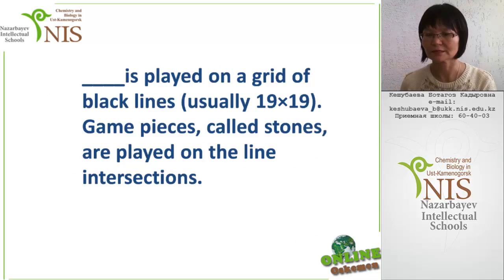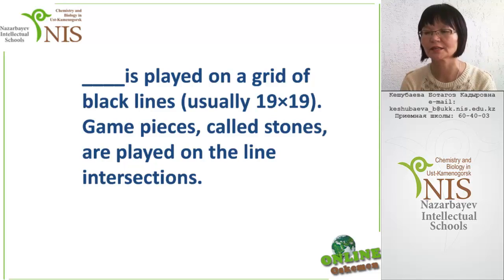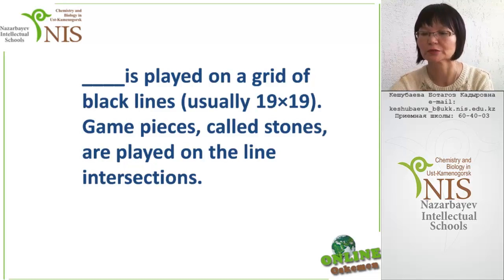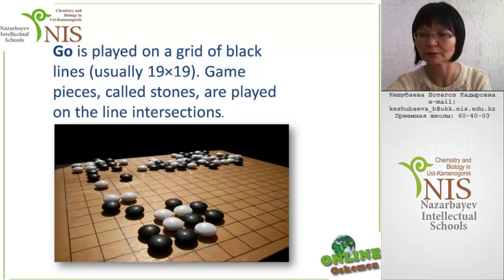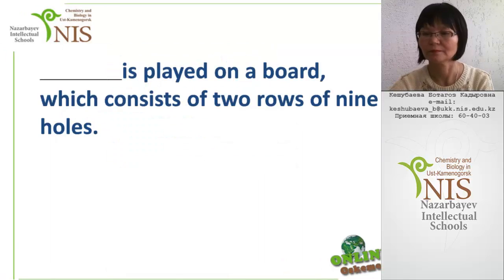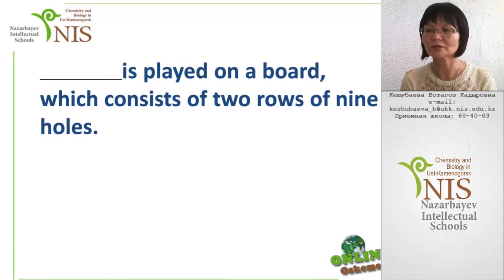Next: this game is played on a grid of black lines, usually 19 by 19. Game pieces called stones are played on the line intersections. Do you know this game? It is called Go. This game is played on a board which consists of two rows of nine holes — do you know it?